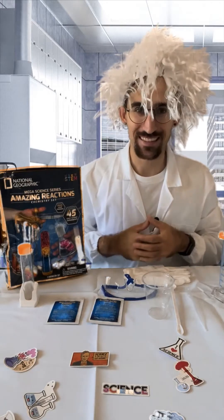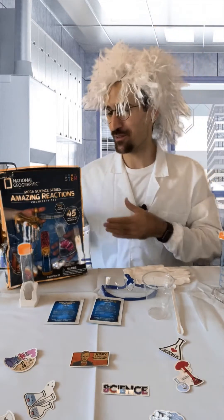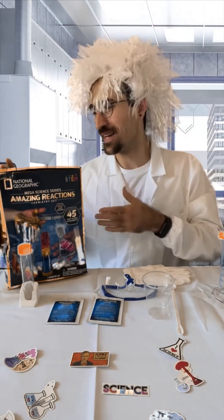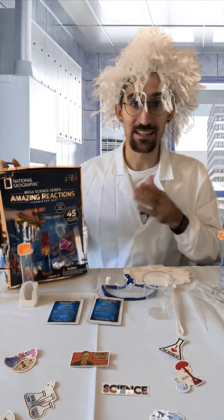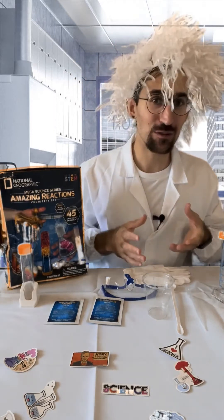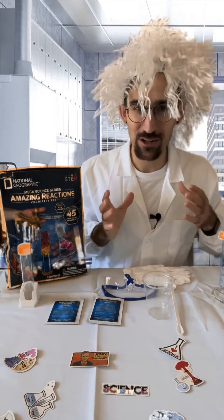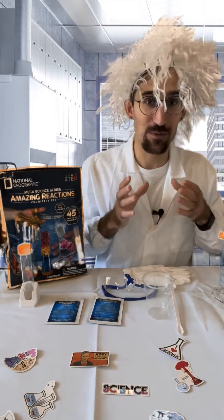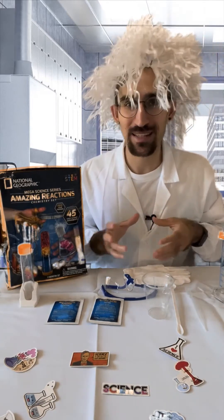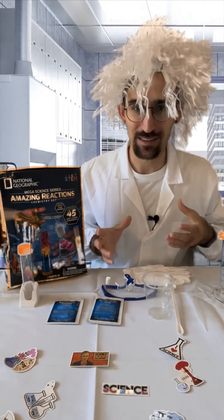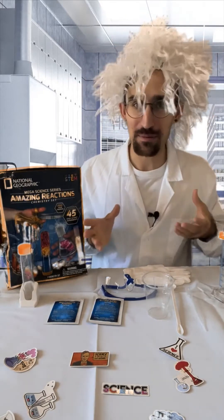Scientists, welcome back to the lab. Today we're going to be going through this National Geographic amazing reactions chemistry set, specifically looking at acids and bases in order to understand color-changing chemistry to allow us to measure and determine the acidity of different things we have in front of us as well as maybe things around the house.